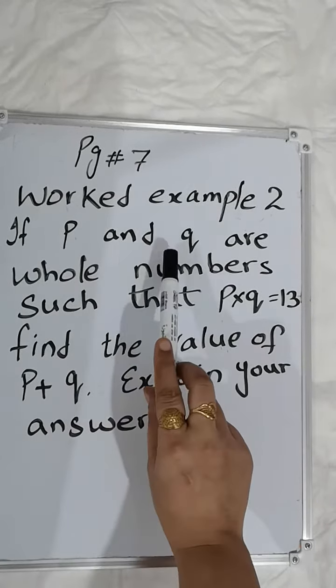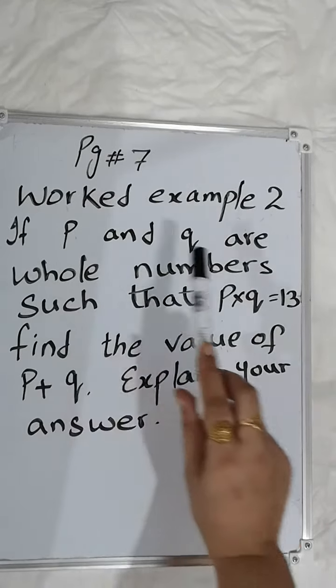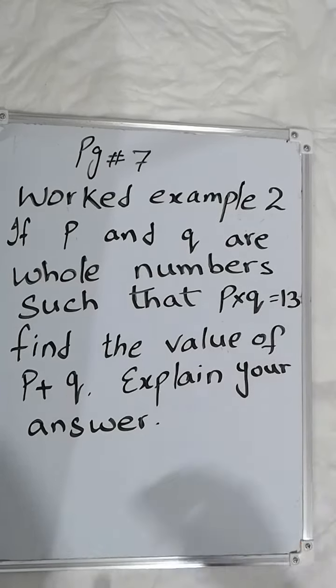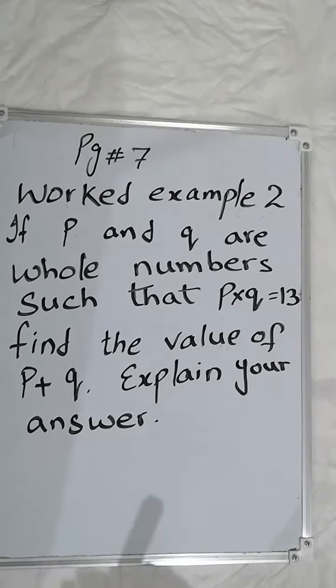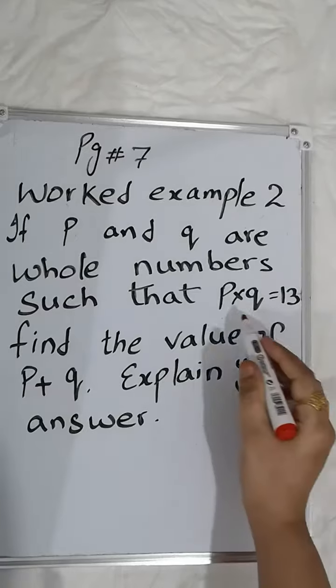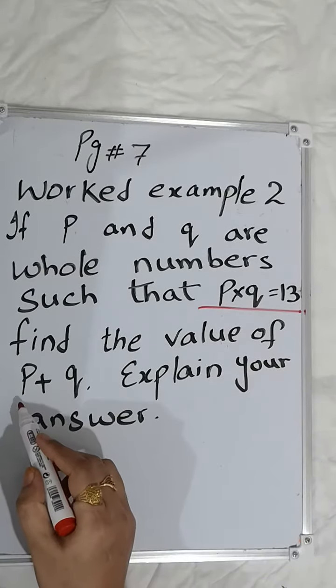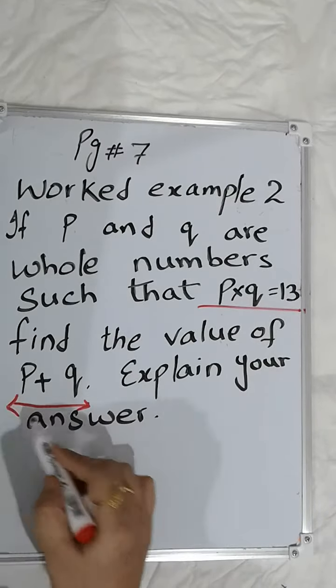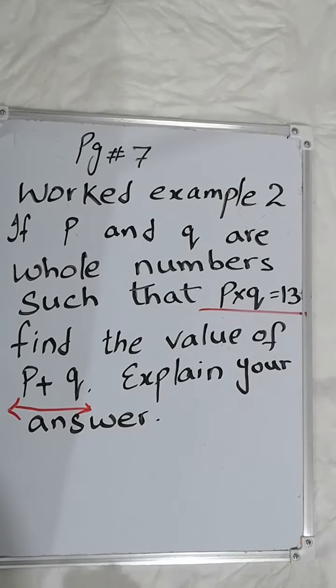They tell us that P and Q are two whole numbers, and when we find the product of these two numbers, we get a number which is equal to 13. We have to find the sum of the numbers and we have to explain our answer.